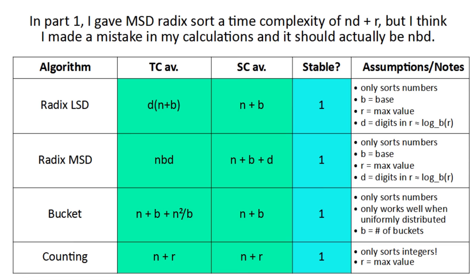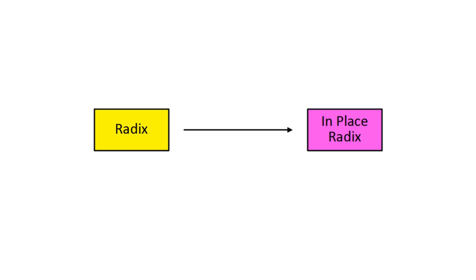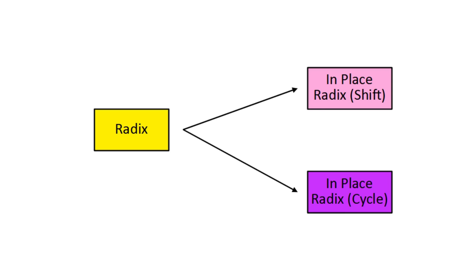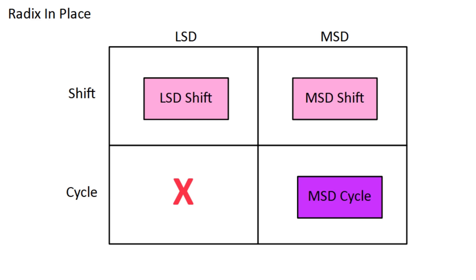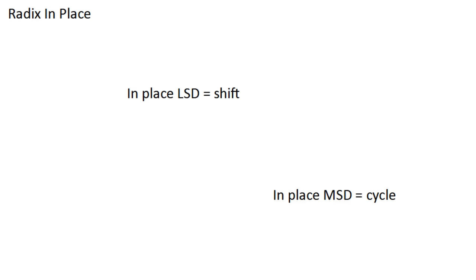Now for some variations on radix sort, starting with making it in place. There are actually two different ways to do this, which I'm going to call shift and cycle. The cycle method is unstable, so it only works on MSD radix sort. The shift method can be used on both, but there's no reason to use it on MSD since cycle is way better. Therefore, if you eliminate that combination, there's a one-to-one correspondence between the methods, so people just name the variety of radix sort and the method is implied.